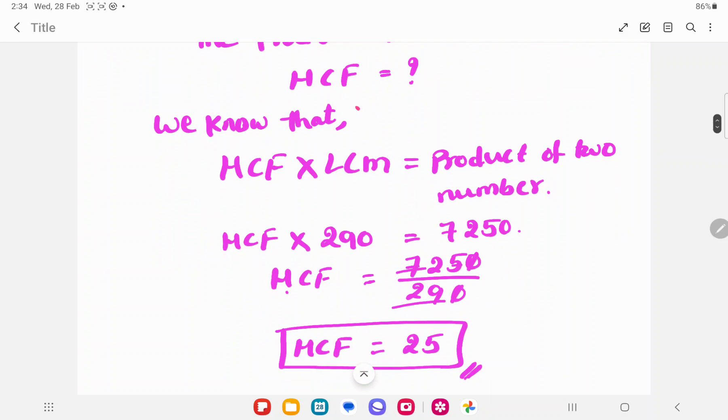So, next HCF here, 290 is multiplied with HCF. Then this 290 on the left hand side, we divide. So, HCF is equal to 7250 by 290.